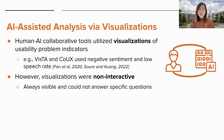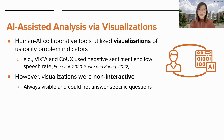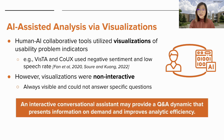To address this issue, there is an increasing trend of incorporating machine learning and AI into the UX field. Recent work developed human and AI collaborative tools where UX evaluators can utilize visualizations to inform their analysis. However, these non-interactive visualizations provided information regardless of whether it was needed and fell short in addressing specific questions that UX evaluators may have about observations from the recordings. Thus, we consider that an interactive conversational assistant may provide a Q&A dynamic that presents information on demand and improves analytic efficiency.